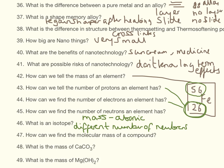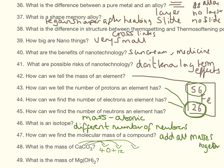How can we find the mass of a compound? Add all the masses together. For calcium carbonate: the mass of calcium is 40, carbon is 12, oxygen is 16 and we have three of those. Pop all of those into our calculator — the mass of calcium carbonate is 100.